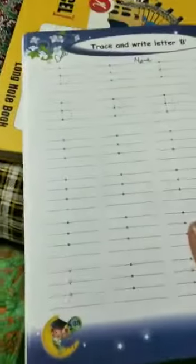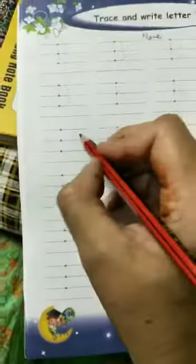So open your book. First of all, you will write here the date, then your name and homework. And then we will learn how to write B, letter B.